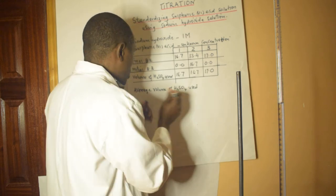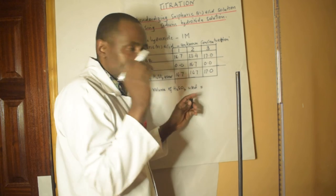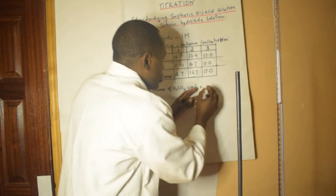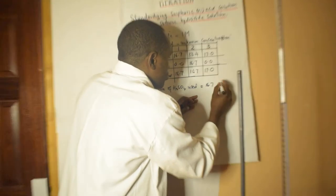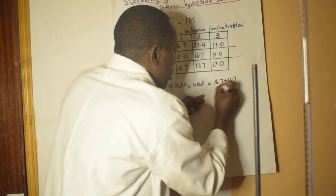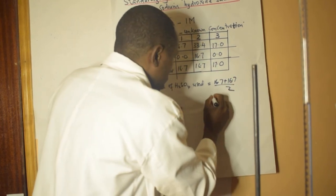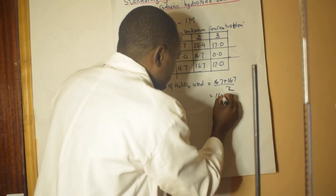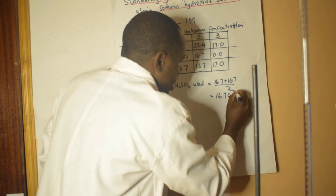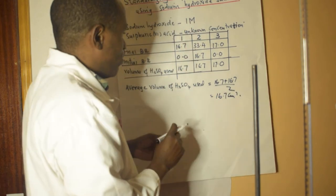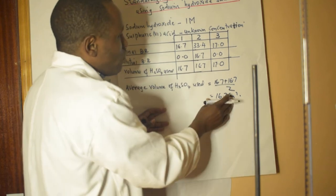When getting the average value, I'm only supposed to average values within plus or minus 0.2 of each other. That means I'm going to average those two values, and what I'll get is 16.7 cubic centimeters.